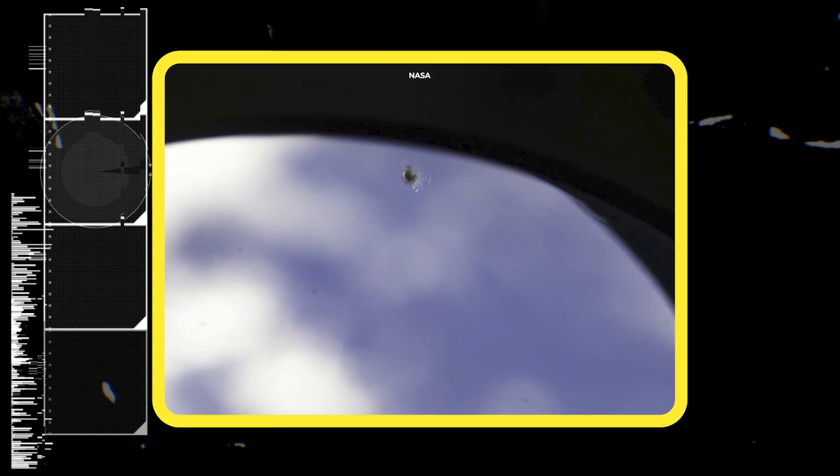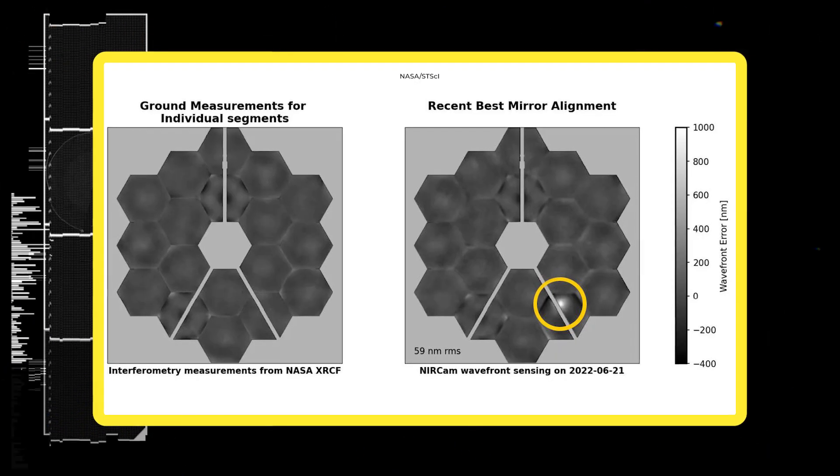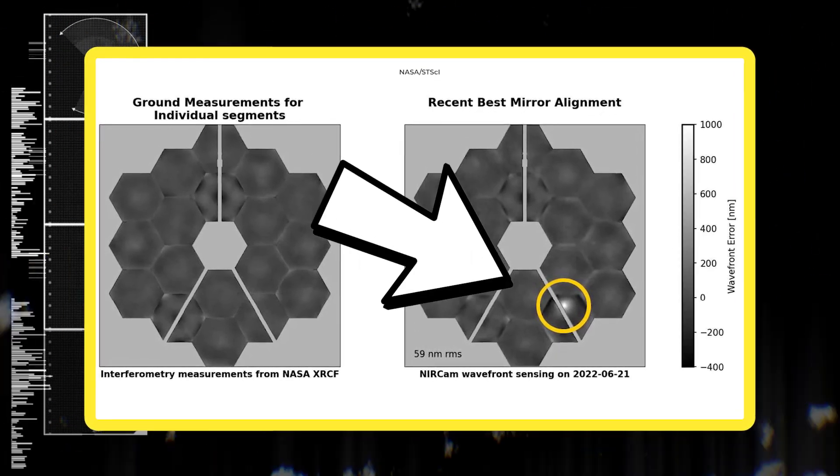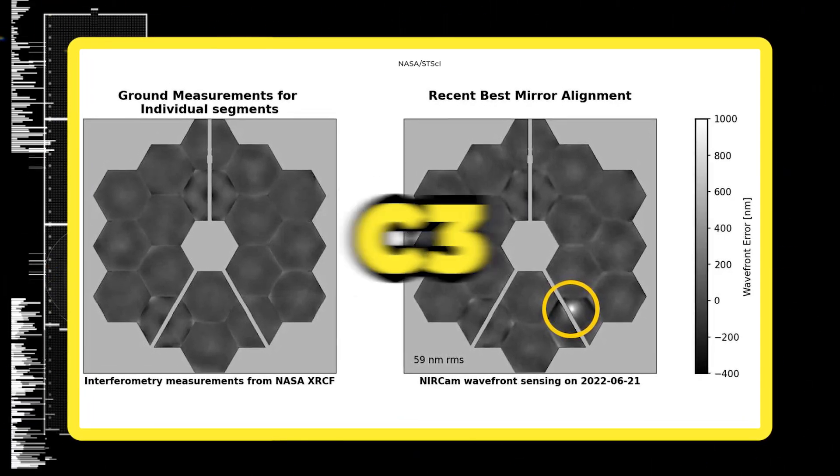Here's a picture of a micrometeoroid impact on one of the windows of the International Space Station. Here's another image. On the right, you can see the damage on one of Webb's 18-hexagonal golden mirrors called C3.